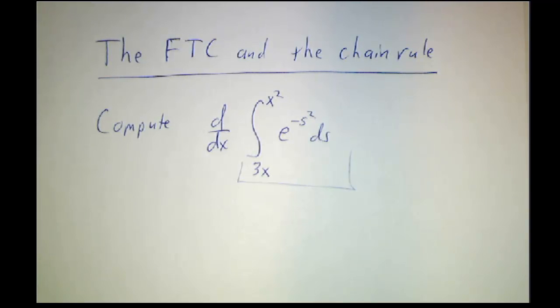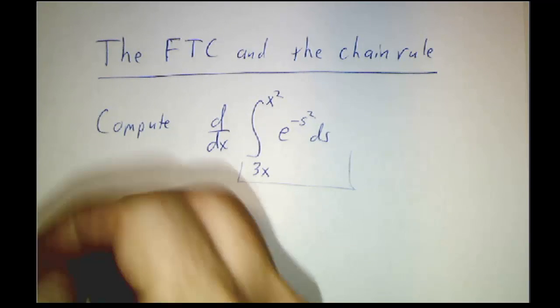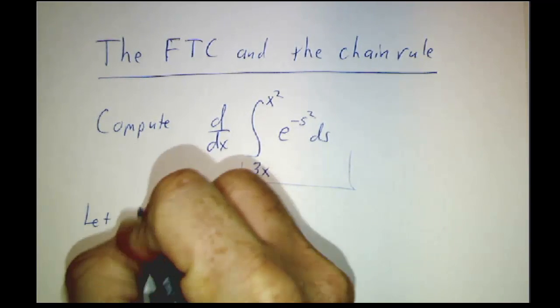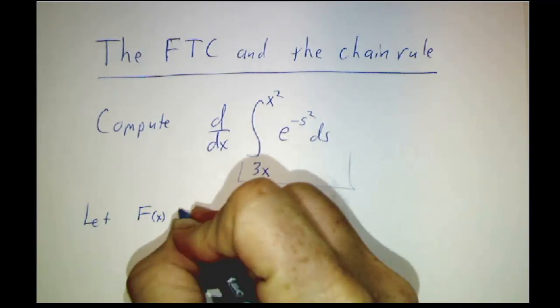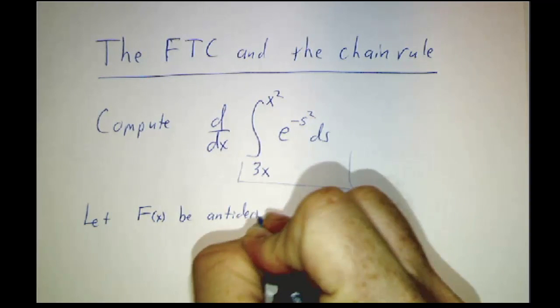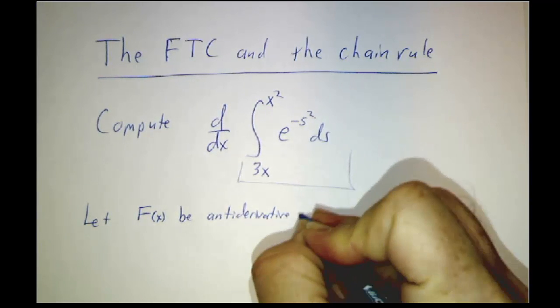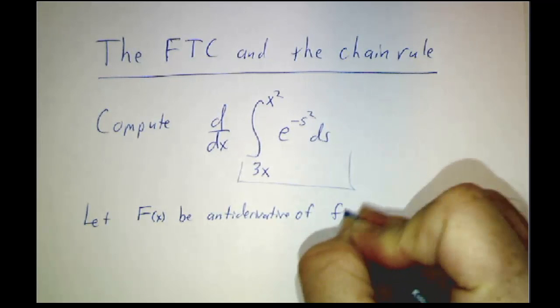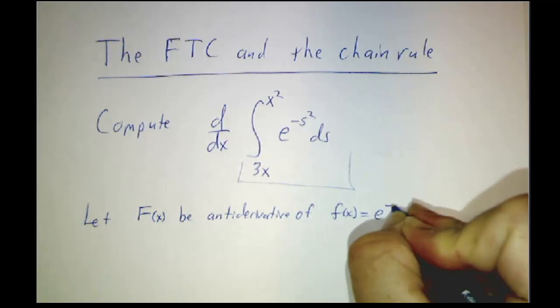In fact, we know that the integral does make sense. We know that there is an antiderivative of e to the minus s-squared. We just don't know the formula for it. So let's let F be the antiderivative of f, which is e to the minus x-squared.